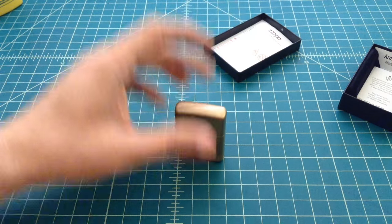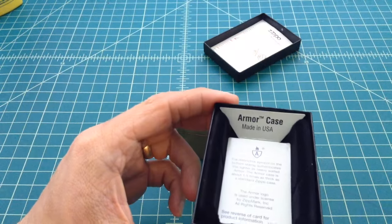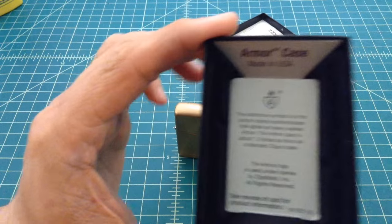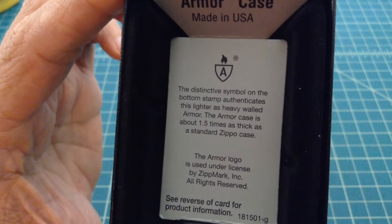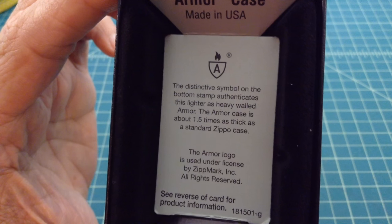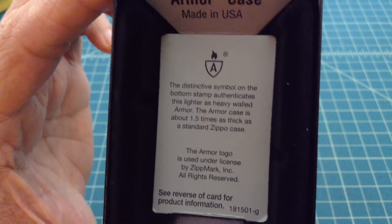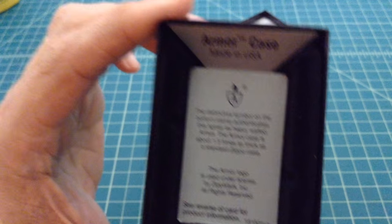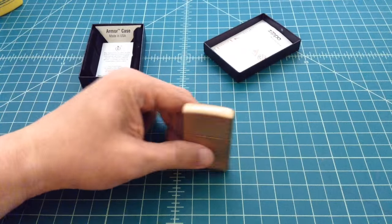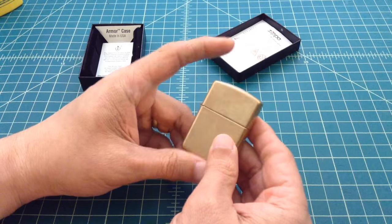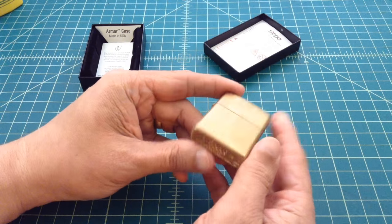This lighter is part of their armor class or armor case, and what it really says is that the armor case is one and a half times as thick as a standard Zippo case. So these things cost a little bit more—I think this was around 15 bucks—and they're a little bit more sturdy, a little bit more well-built.